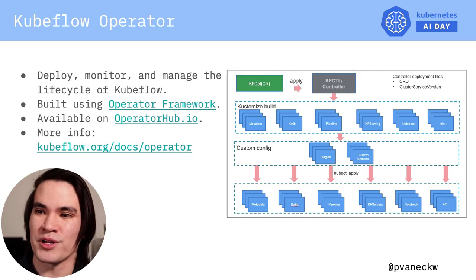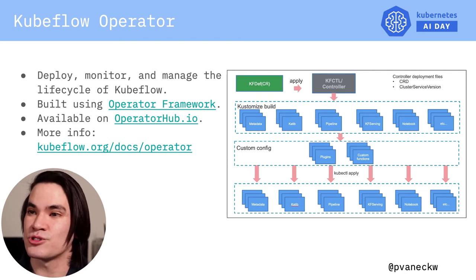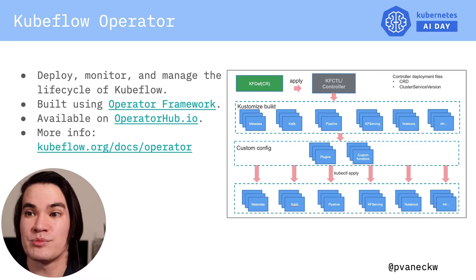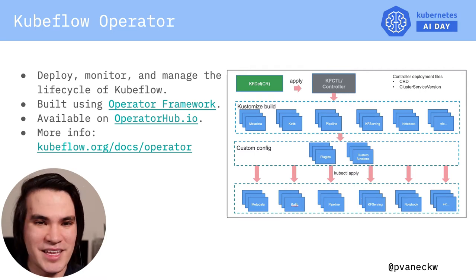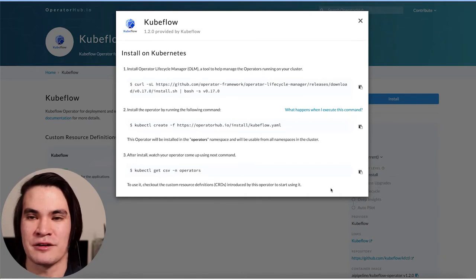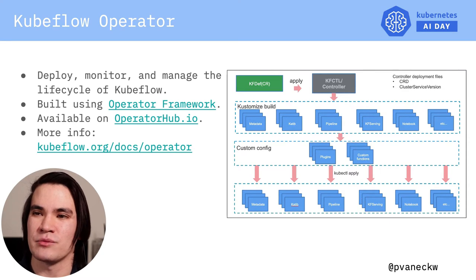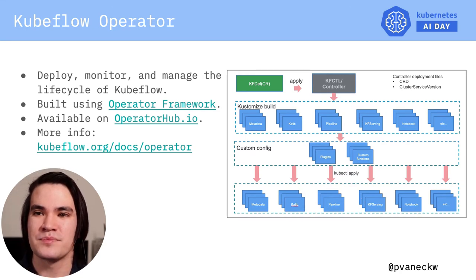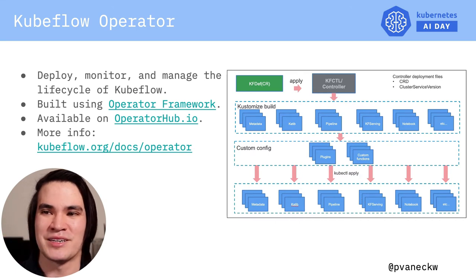Through the use of a custom control loop and CRDs — custom resource definitions — along with the needed domain-specific knowledge, a well-made operator is able to implement and automate common day one and day two operations. This leads us to the Kubeflow operator, which can deploy, monitor, and manage the lifecycle of Kubeflow. It was built using the operator framework, an open source toolkit for building, testing, and packaging operators. Currently, the Kubeflow operator relies on kf-cuddle and is built on top of a kf-def custom resource. Depending on your cloud environment, deploying Kubeflow can be as easy as a few simple steps since it's available on OperatorHub. The operator will also monitor all child resources of your Kubeflow deployment and restore anything that goes down.